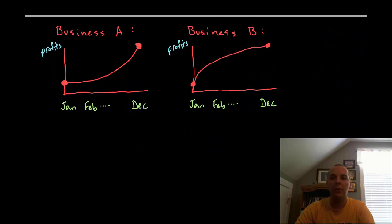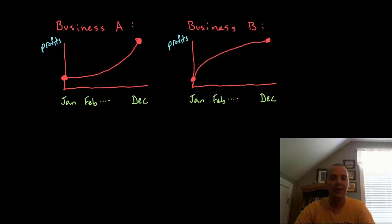I'm going to unfold the idea of concavity with an example. Here are two businesses, business A and business B, and both are good businesses. I've modeled their profits from January through December. Their profits are growing every month. If you took the rate of change of their profits, it would be positive for business A and business B.